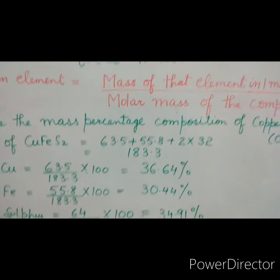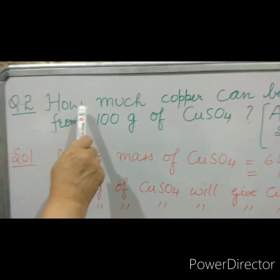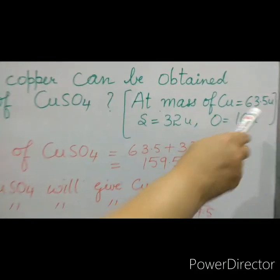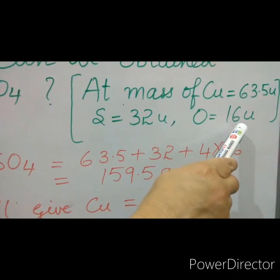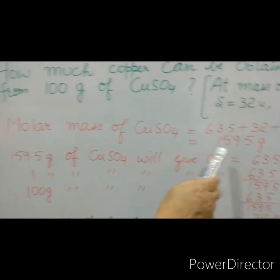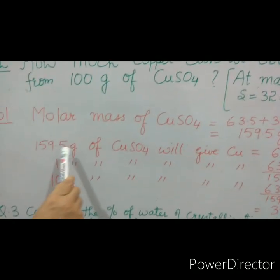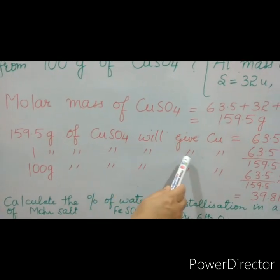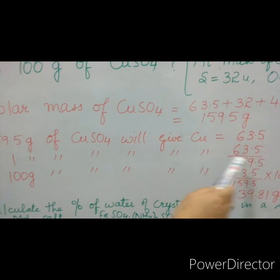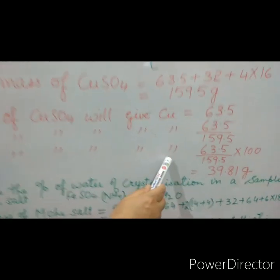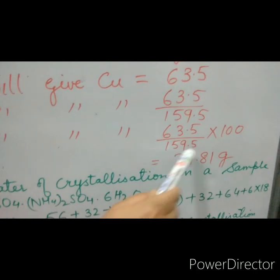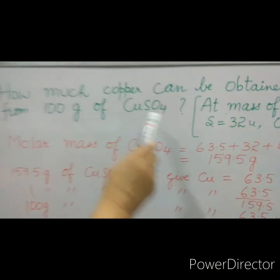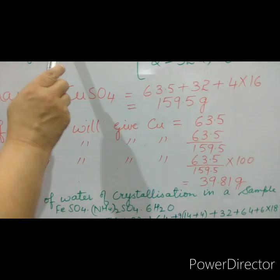Next question: how much copper can be obtained from 100 grams of copper sulfate? Atomic masses: copper 63.5, sulfur 32, oxygen 16 u. The molar mass of copper sulfate is 159.5 grams. So 100 grams of copper sulfate will give copper equal to 63.5/159.5 × 100 = 39.81 grams. Thus, in 100 grams of copper sulfate there is 39.81 grams of copper.